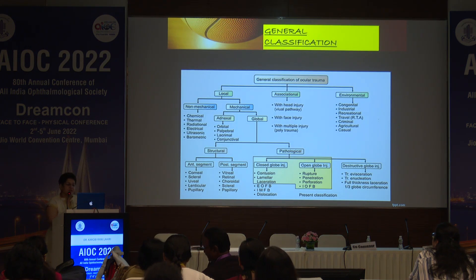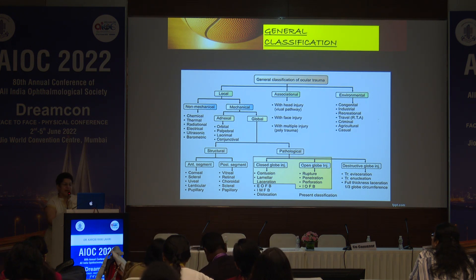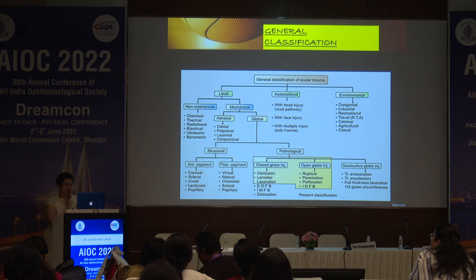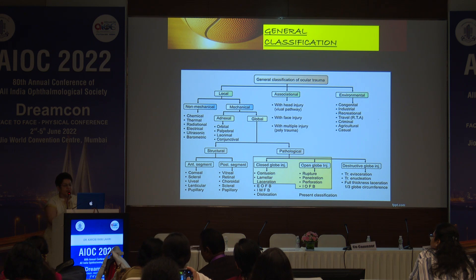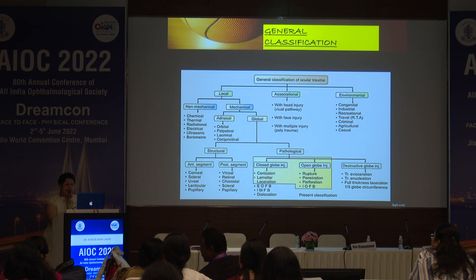The sub-classification of globe injuries is divided into structural and pathological. Structural injuries involve the anterior segment — cornea, sclera, uveal tract, lens, or pupil — and the posterior segment, which includes the retina, vitreous, choroid, sclera, and optic nerve. The pathological sub-classification is further divided into closed globe and open globe.